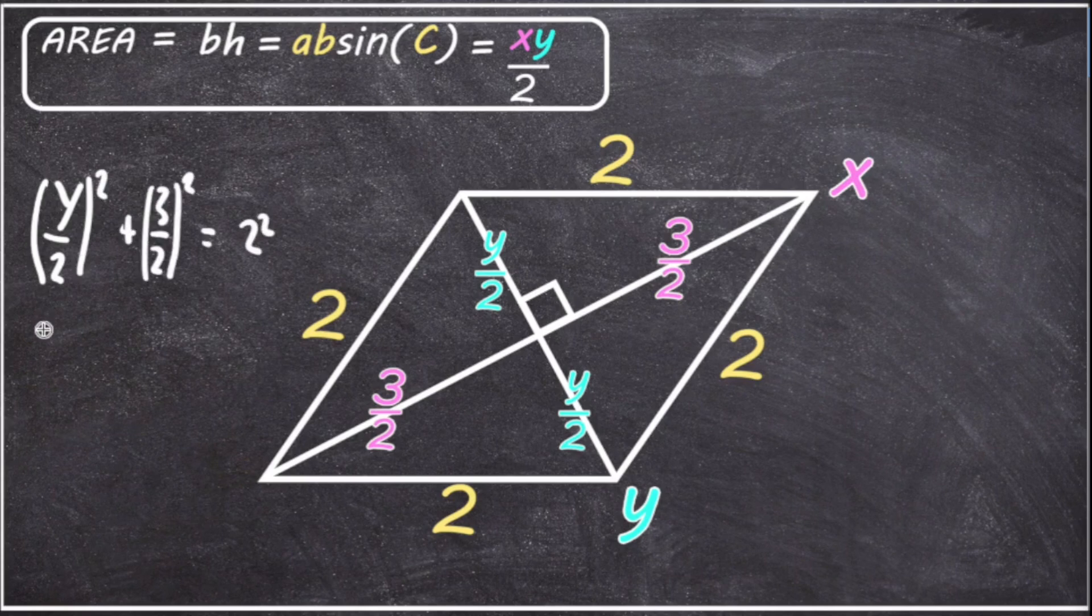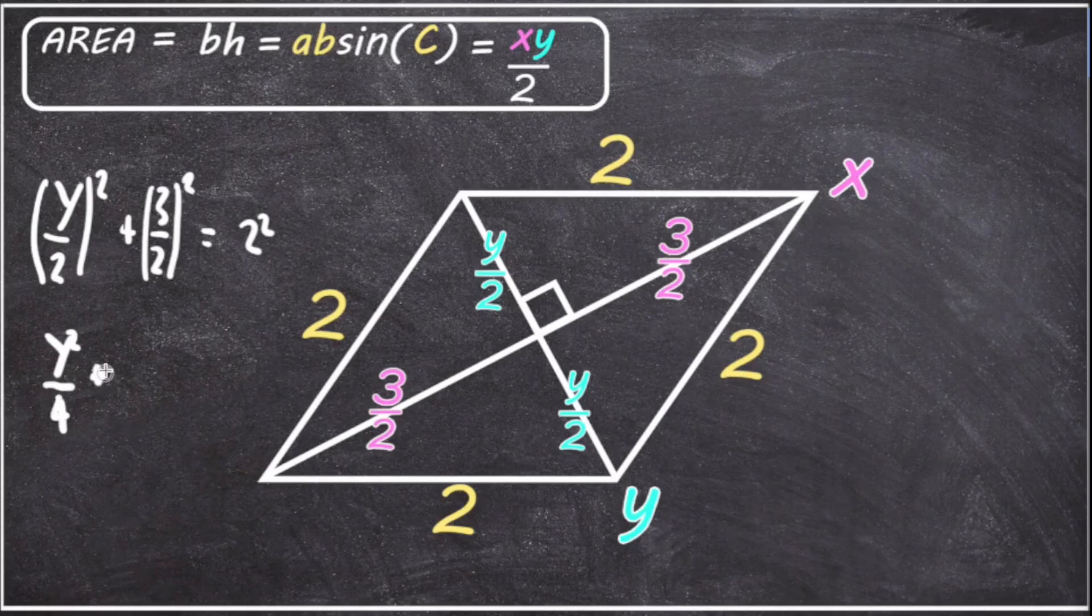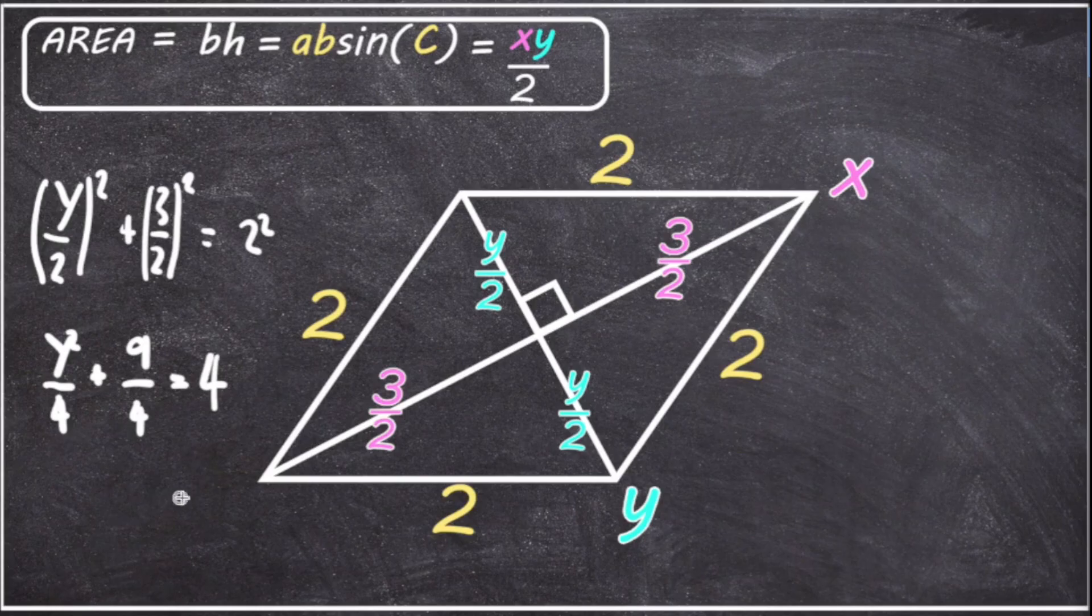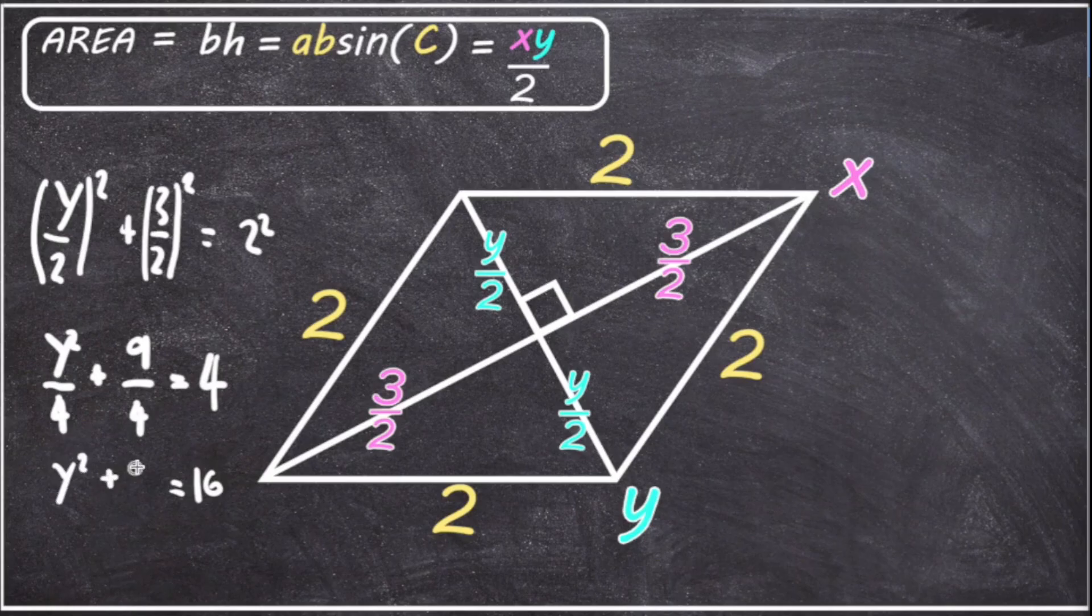Now if we multiply everything out, we get Y squared over four plus nine over four is equal to four. Let's multiply both sides of the equation by four. So on the right hand side, we're going to get 16 and fours cancel on the left hand side. So that's Y squared plus nine equals 16.